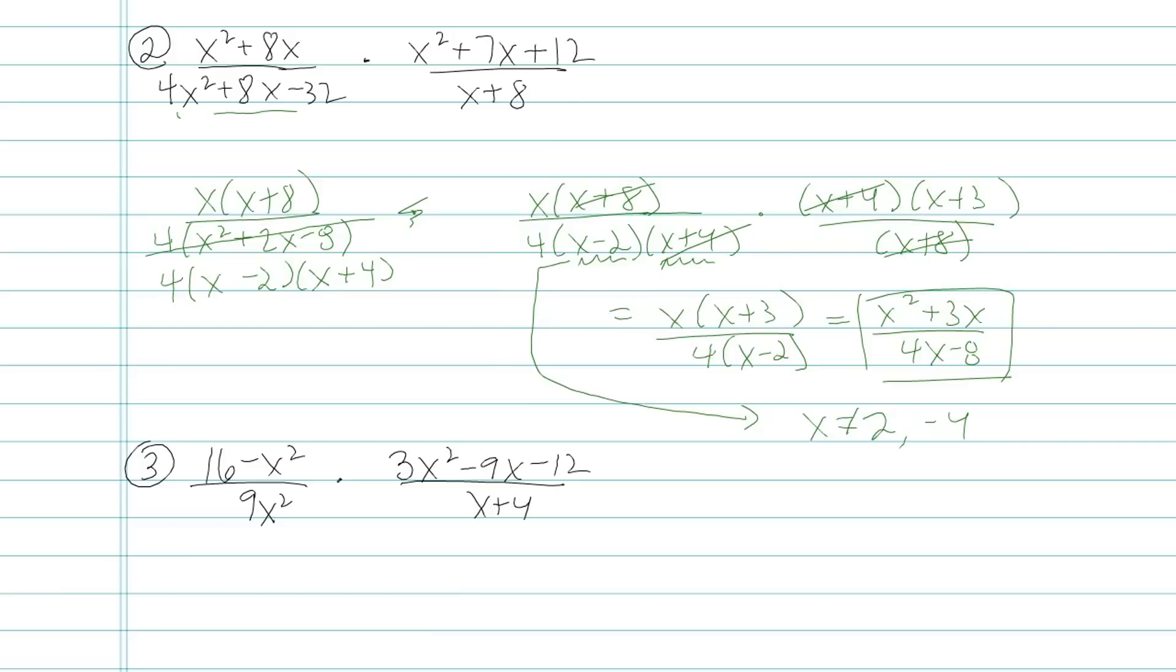And then in my second fraction, I had x plus 8. That told me x could not be equal to negative 8. These are my domain restrictions, the numbers that x is not allowed to be.